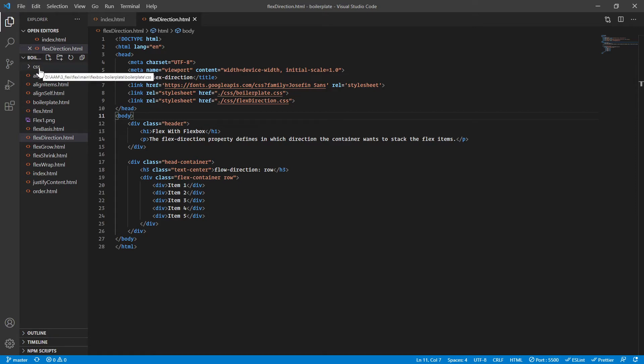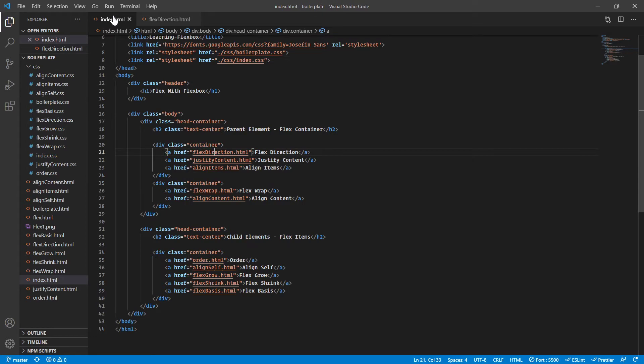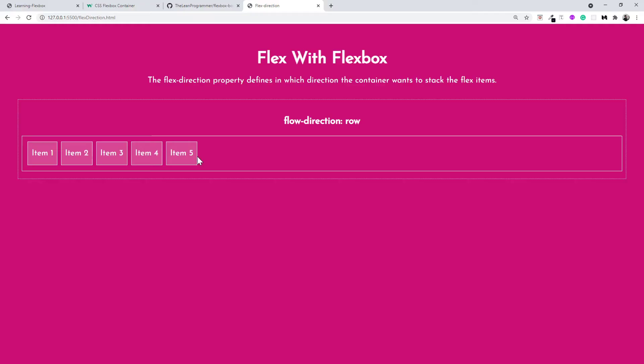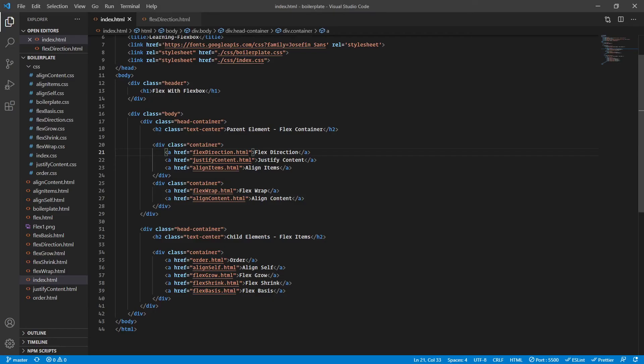Each HTML file has its own CSS file, a CSS file with the same name. So for example, the first link points to the flex direction. Let's go back here.